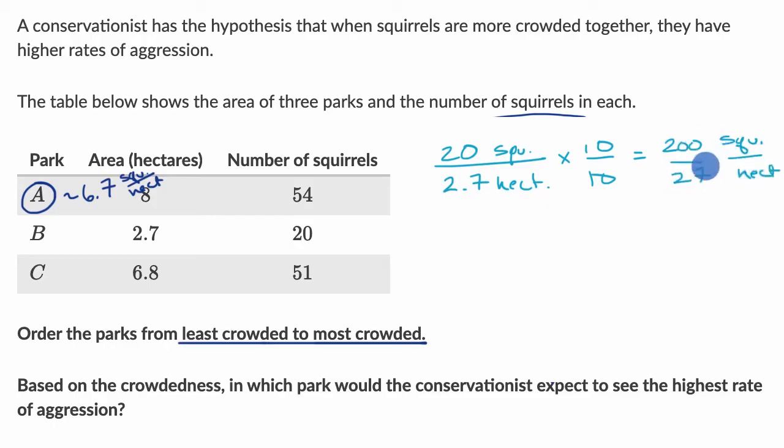200 over 27 squirrels per hectare. Let's take 27 into 200. 27 is close to 30, which would go into 200 six times. It goes into 200 six times. Six times seven is 42. Six times two is 12, plus four is 16. Subtract, I get 38. So maybe I can fit in one more 27.